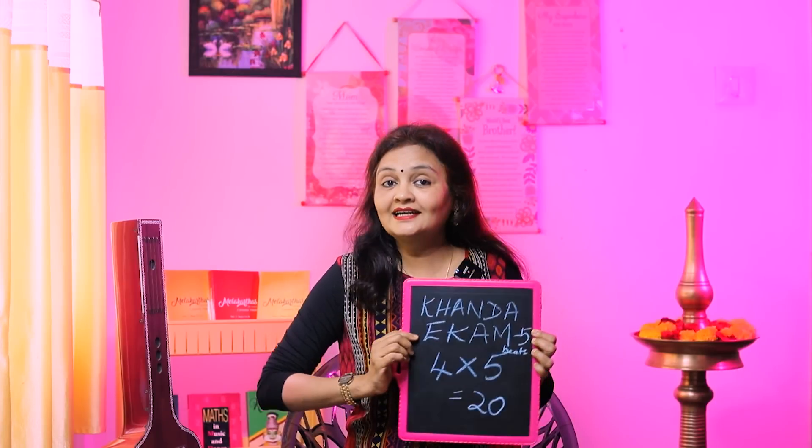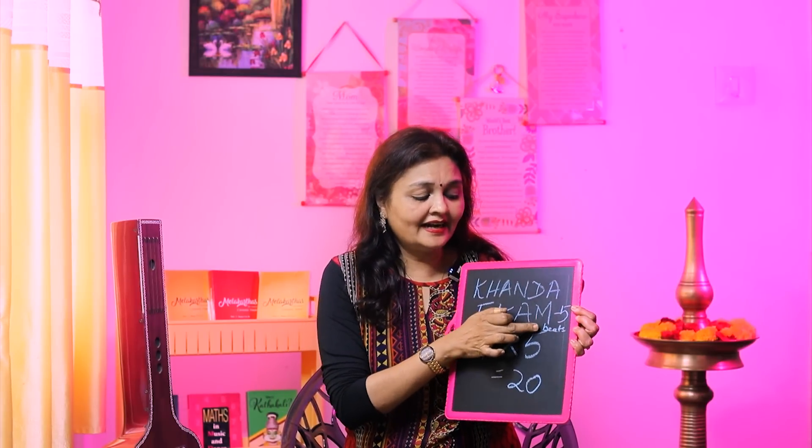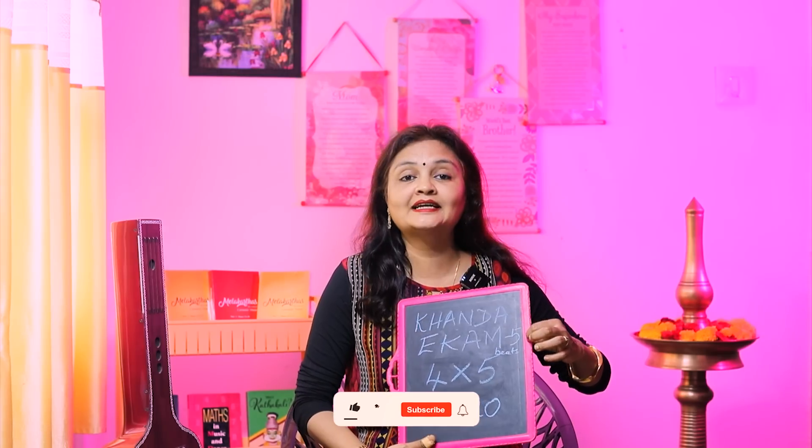Looking at the slate: Khanda Ekam, 5 beats. So 1, 2, 3, 4, 5 — I am not tapping, not turning, not doing anything else. This Tala has only one element, what we call the Lagu. In Lagu, we tap and then we count. I am counting 5 times, giving us 5 beats. Since it has only one element, I just do this once and then repeat — one repetition, and one Avarthana comes to a close. The next cycle begins the next Avarthana.